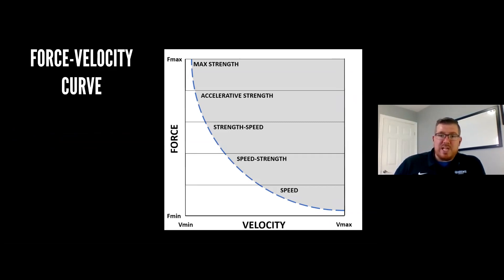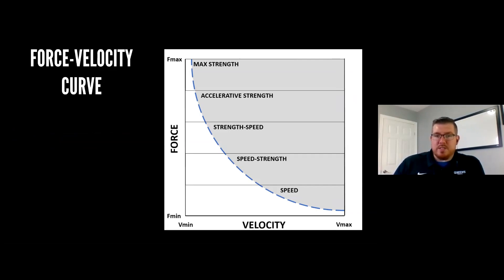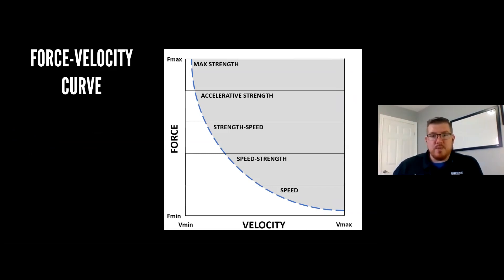Research shows we can break down sections of the force-velocity curve and classify them as: max strength, accelerative strength, strength-speed, speed-strength, and speed. That moves from the force end of the spectrum to the velocity end. Today I'm going to break down why these zones are important and how they help us train our athletes.